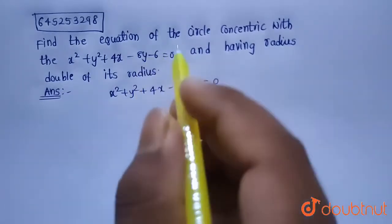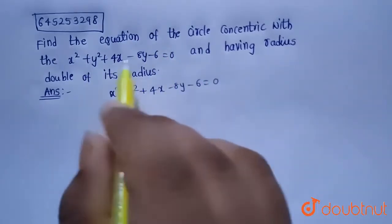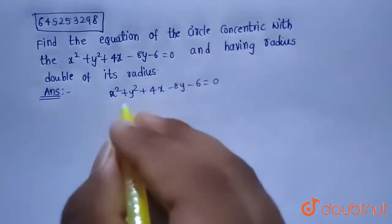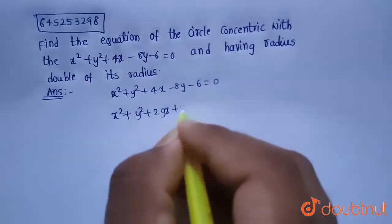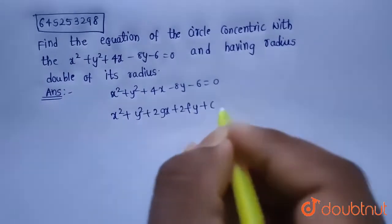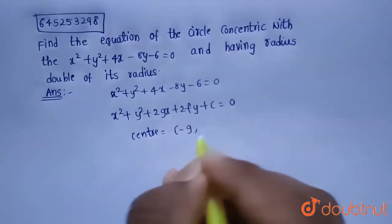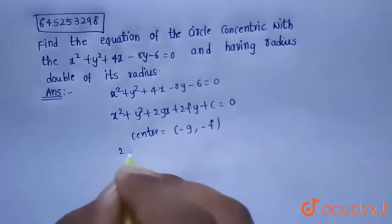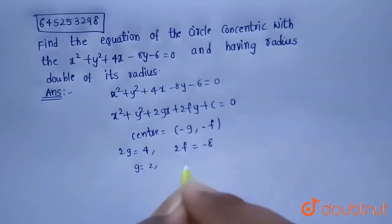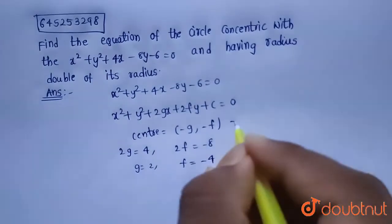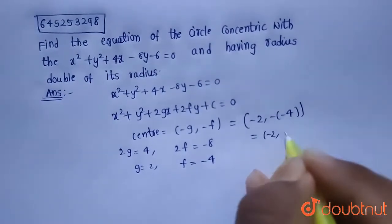To find the center of the required circle, let's find the center of the given circle. For a circle x² + y² + 2gx + 2fy + c = 0, the center is (−g, −f). Comparing, 2g = 4 and 2f = −8, so g = 2 and f = −4. Therefore the center is (−2, 4).